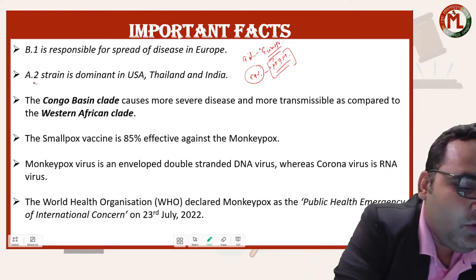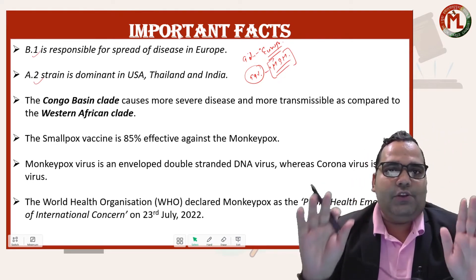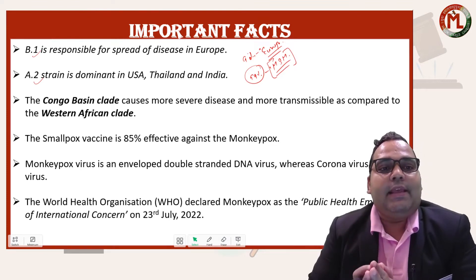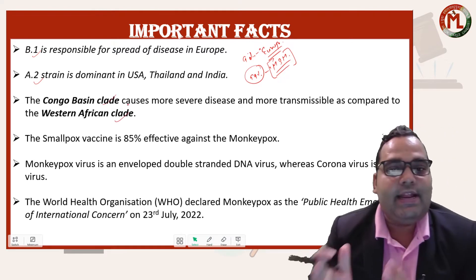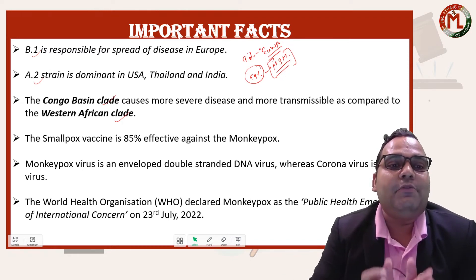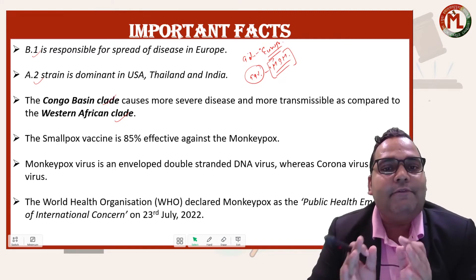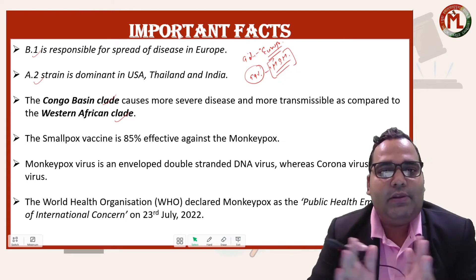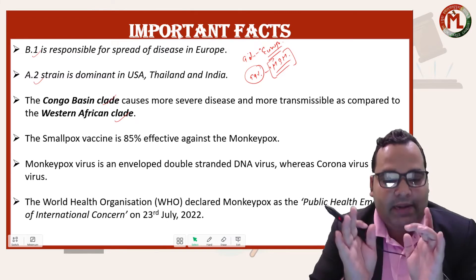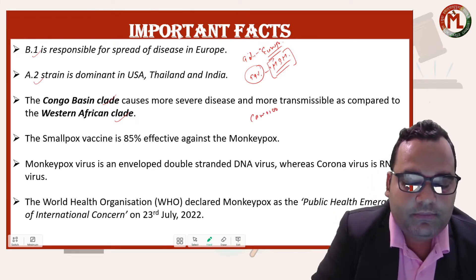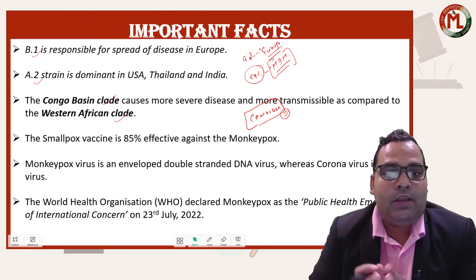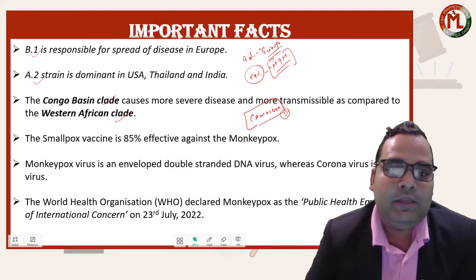Comparing the two strains: B.1 is highly transmissible while A.2 is not as transmissible. The Congo Basin clade is responsible for causing more severe disease and is more transmissible compared to the West African clade. Interestingly, a country called Cameroon is the only country where both clades are found together.